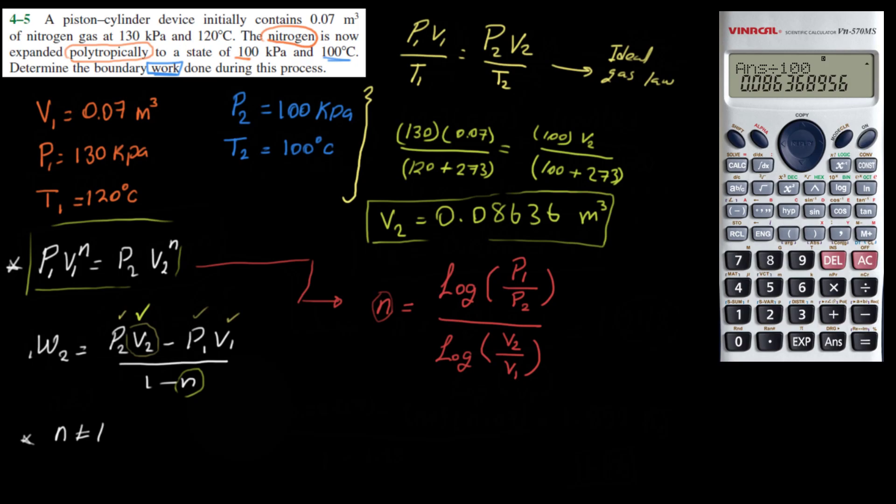Let me plug in the numbers to find N. So the log, where is the log? Oh, here's the log. Log of P1, which is 130 divided by 100, divided by log of V2, 0.08636, divided by 0.07, gives us the answer of 1.249, 1.249. So this is equal to 1.249. This is N.